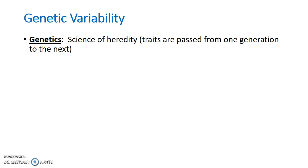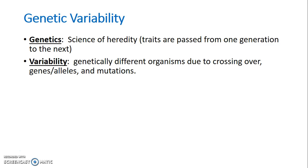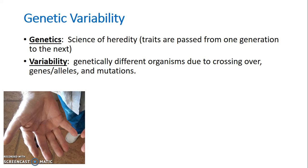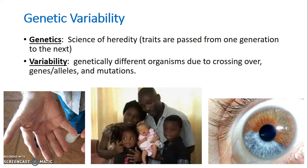As a reminder: genetic variability — genetics means the science of heredity, how traits are passed on from one person to the next. By variability we mean that there are differences between all organisms. It occurs by crossing over (our first video), genes and alleles (this video), and mutations (our next video). We can see genetics expressed differently in different people.